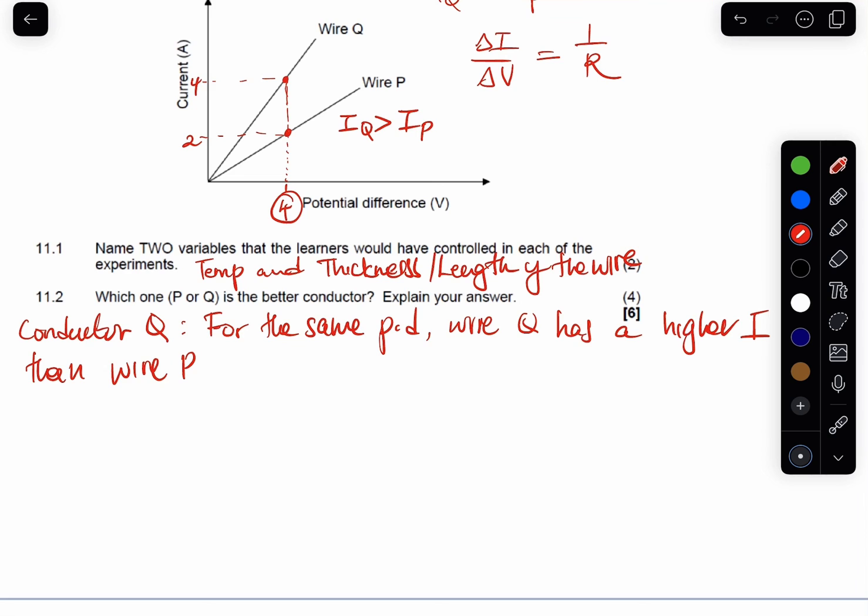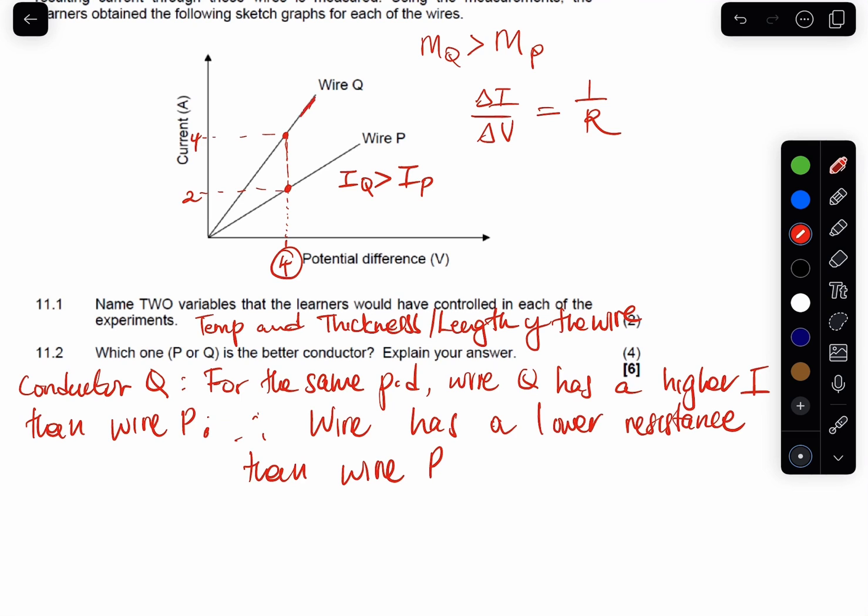So we'll say therefore wire Q has a lower resistance than wire P. As I've mentioned guys, this one has a higher gradient than this one. But the resistance, this one has a lower resistance than this. This one has a higher resistance. Thank you.